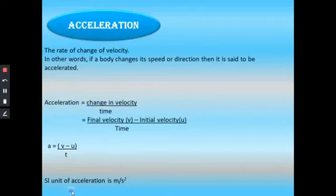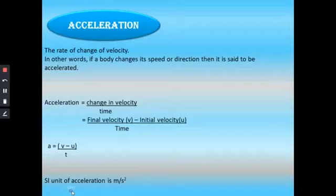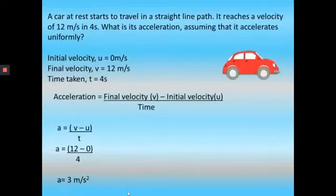Next we will see what is called acceleration. The rate of change of velocity is called acceleration. If a body changes its speed or direction, it is said to be accelerating. Acceleration equals change in velocity divided by time, which is (v minus u) divided by t. The SI unit of acceleration is meter per second squared.